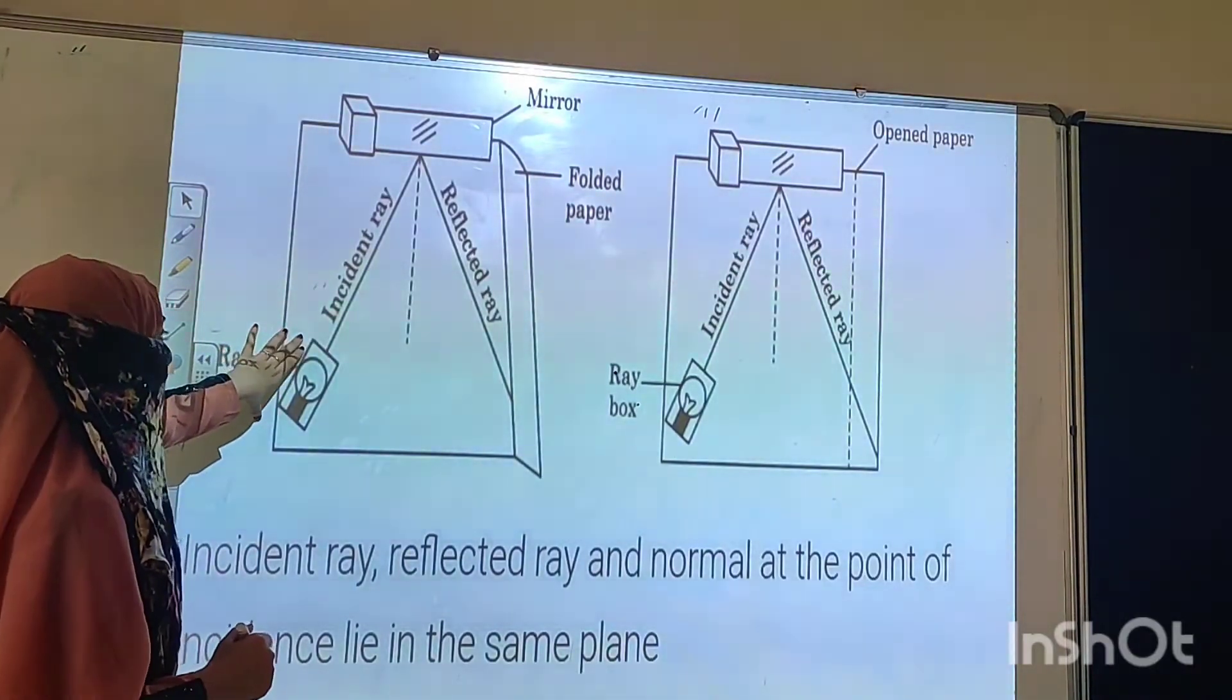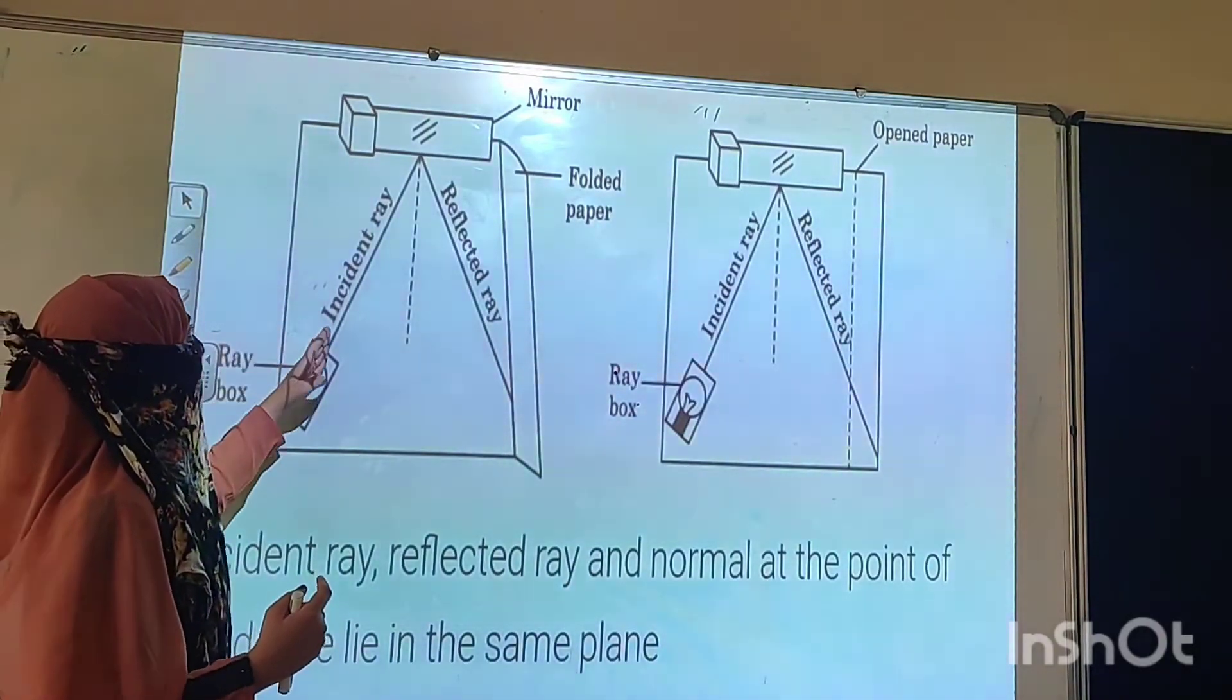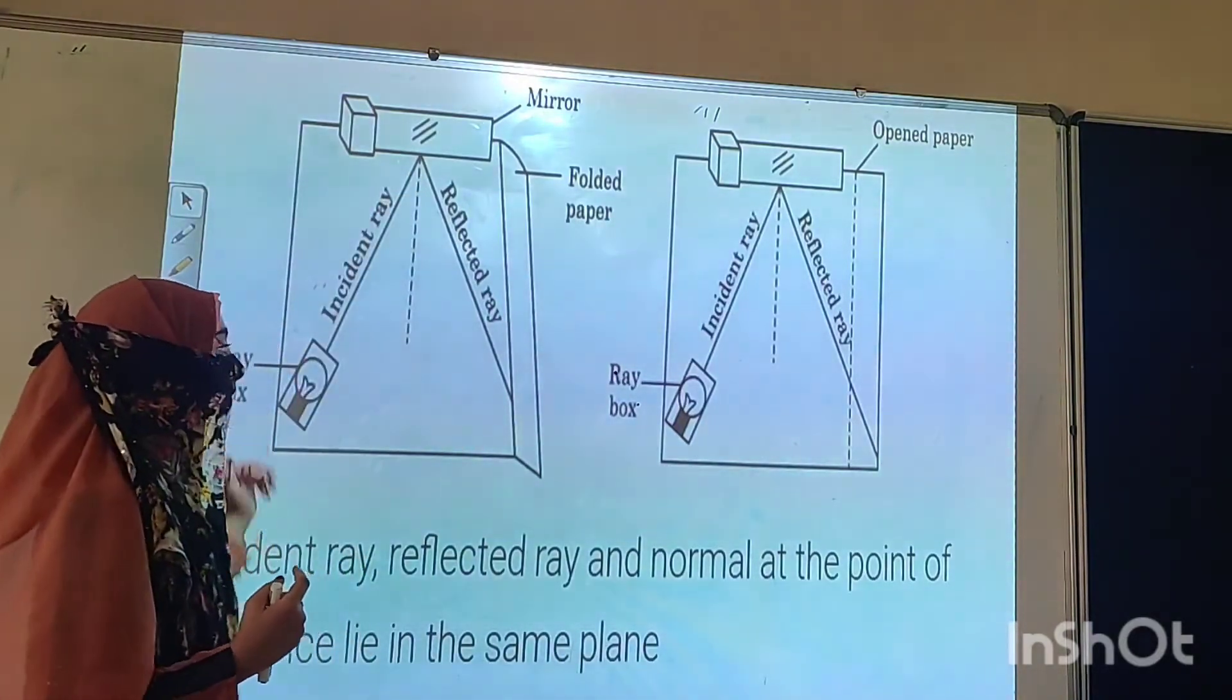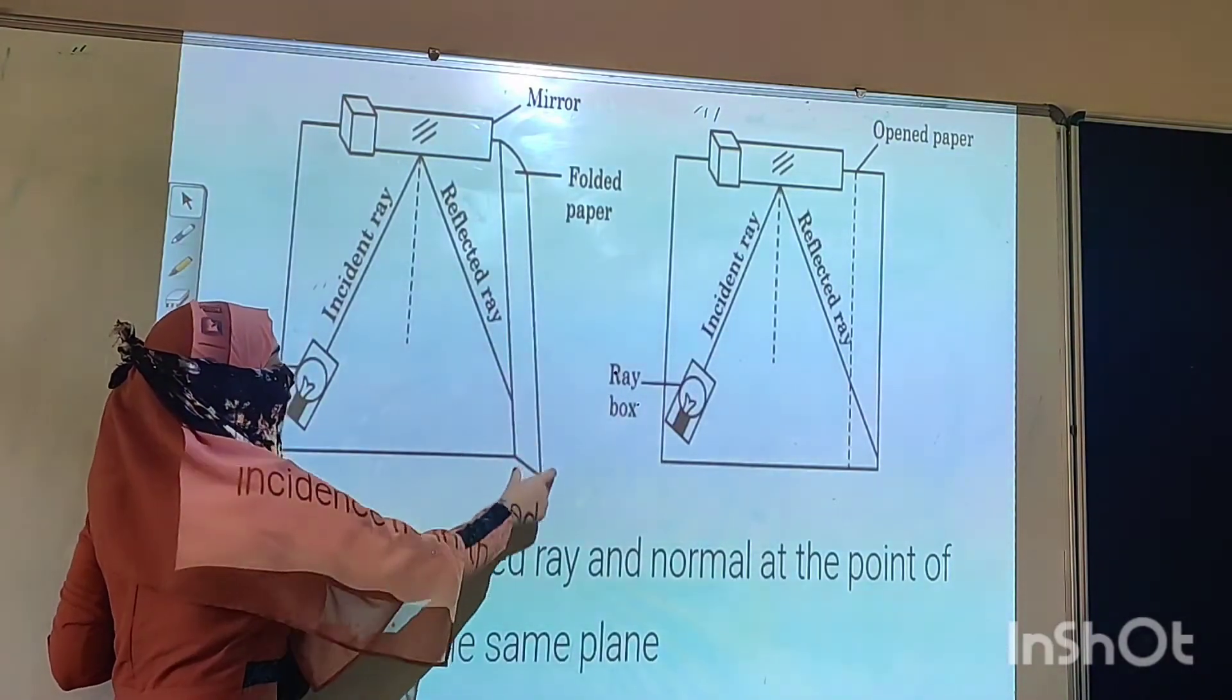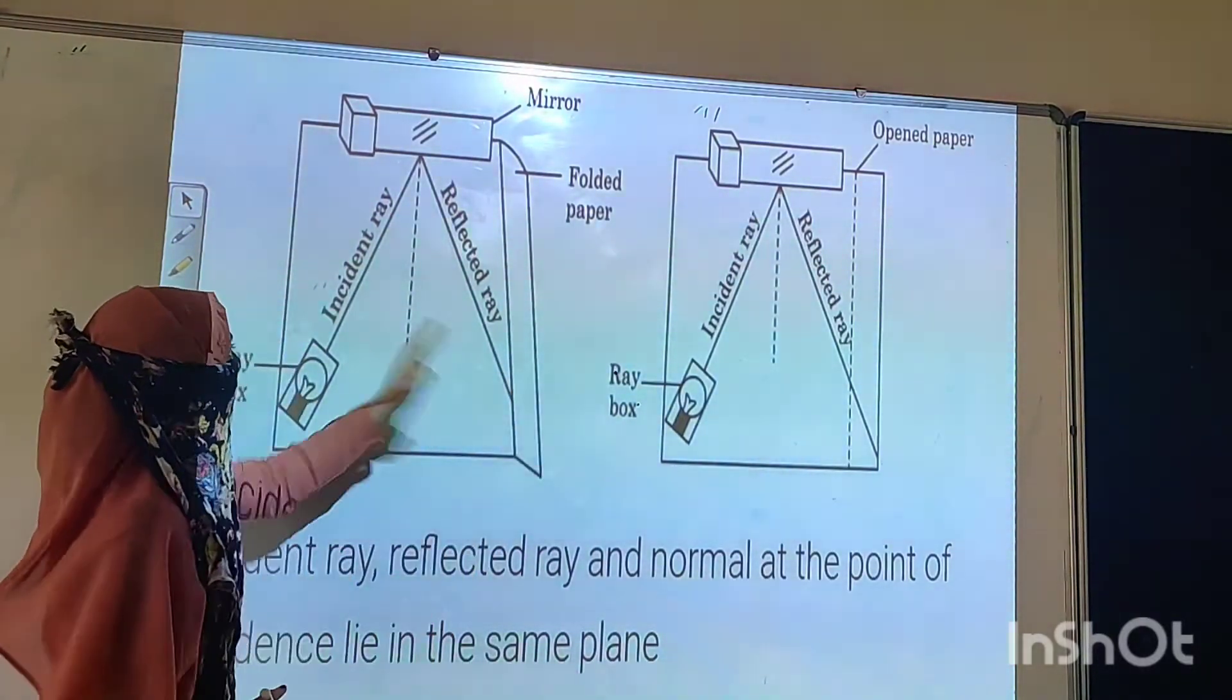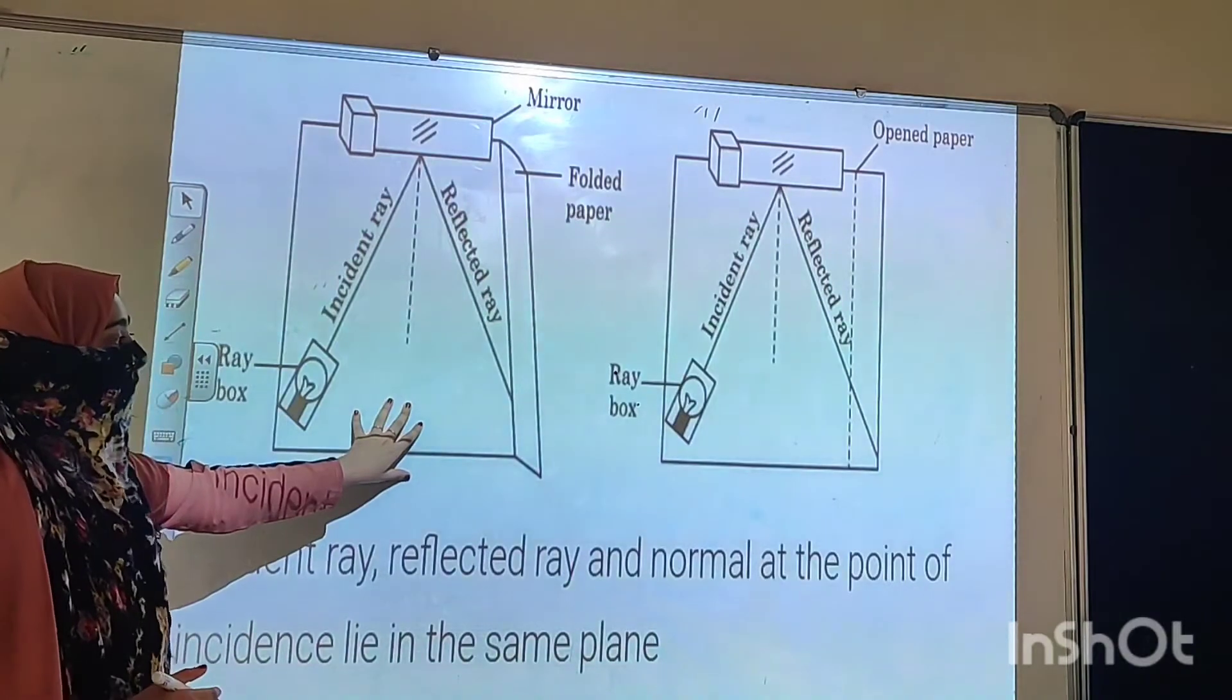Here you have to put the paper, and here you have to put the mirror vertically on the top of the paper. And here you have to put the ray box, this source of light rays. Then you will switch on the torch and you will see the ray. Mark down the incident ray, normal, and then reflected ray.